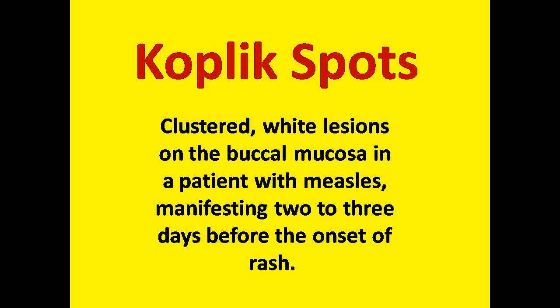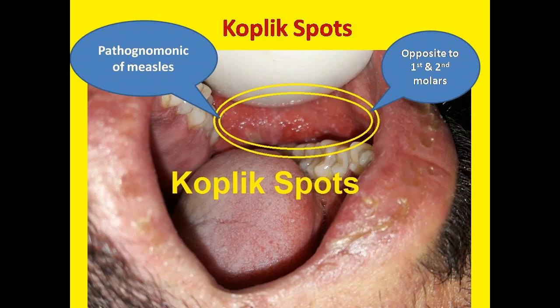Koplik's spots are clustered white lesions on the buccal mucosa in a patient with measles, usually manifesting two or three days before the onset of the characteristic maculopapular rash on the skin. These Koplik's spots are usually seen opposite to the first and second molars, and are pathognomonic of measles disease.